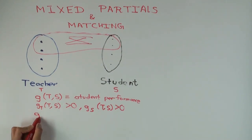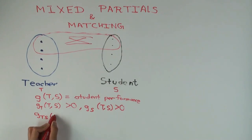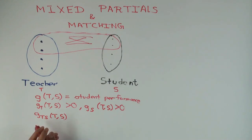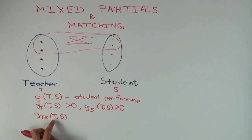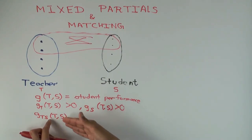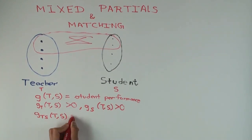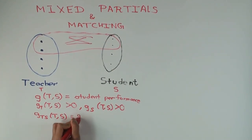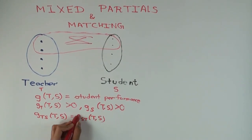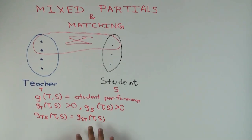g_ts captures how g_t — the effect of a change in teacher quality on performance keeping student quality constant — changes when you change student quality. You can also measure it in the other form, g_st, and these numbers are equal because of Clairaut's theorem. Intuitively, you're measuring how a change in one thing affects the marginal value of the other.